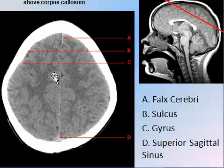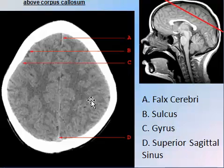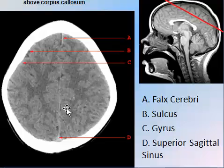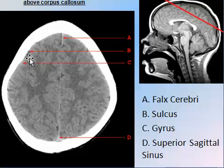Above the level of the commissural fibers — above the corpus callosum — this region is called the central semi-oval. These are the cortical cortex of the brain and the white matter inside, also called the corona radiata. We also see the falx, straight sinus, and superior sagittal sinus.